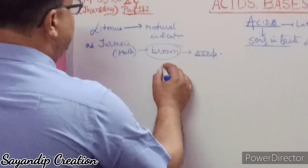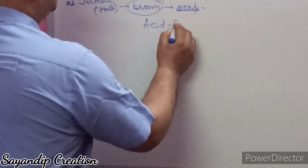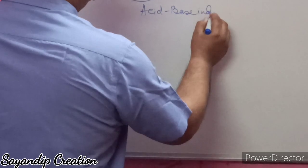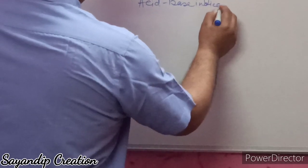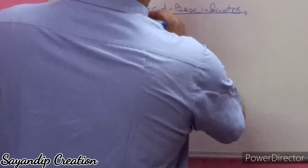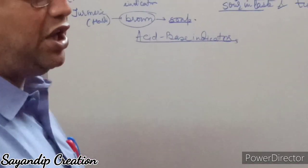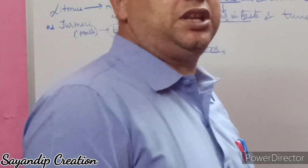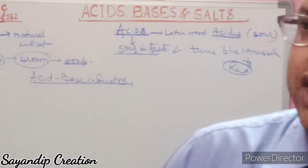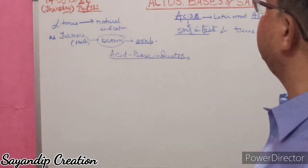In your NCERT book, you will also see acid-base indicators. Acid-base indicators are those substances or indicators which are used to detect the presence of acid or base in a solution.